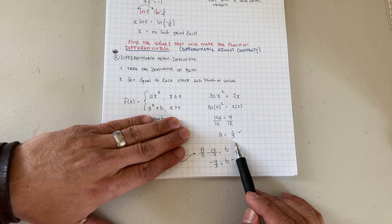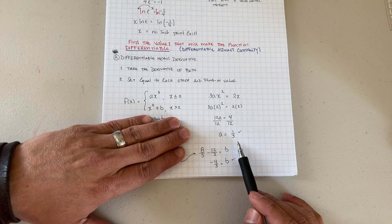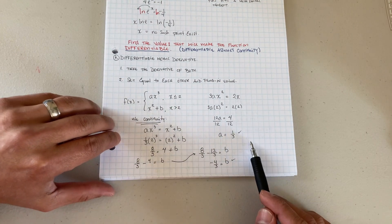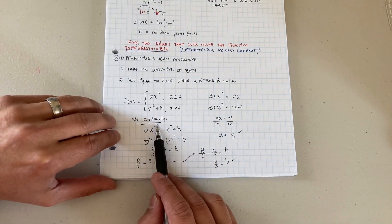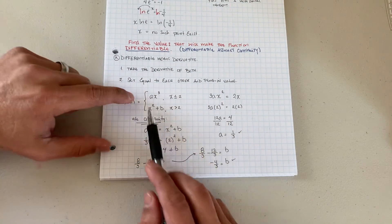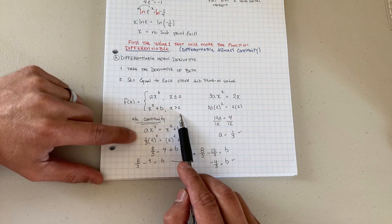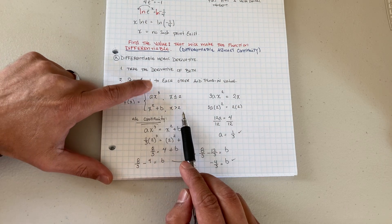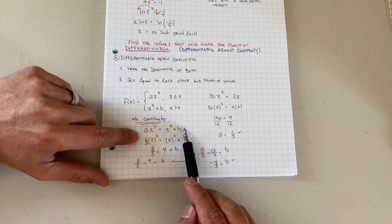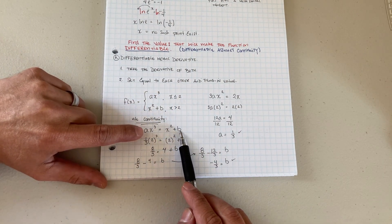Now how do I find the other value b? Well now we go back and we use continuity because we're assuming it's continuous. So what do we do? The limit from the left has to equal the limit from the right at that specific point.